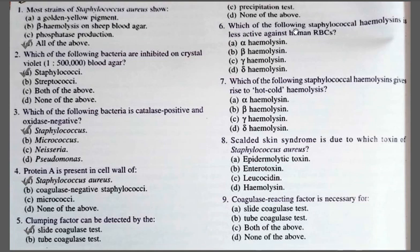Question number six: Which of the following Staphylococcal hemolysins is less active against human RBCs? Options: alpha hemolysin, beta hemolysin, gamma hemolysin, delta hemolysin. The correct option is A, alpha hemolysin. Hemolysins are membrane-damaging exotoxins produced by Staphylococcus. Staphylococcus produces all four types of hemolysins, but alpha hemolysin lyses rabbit RBCs yet is less active against human RBCs.